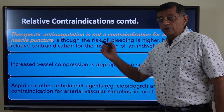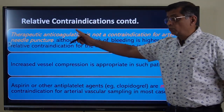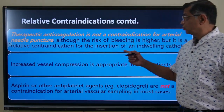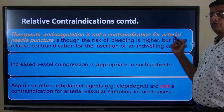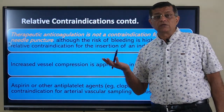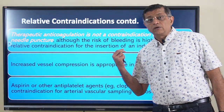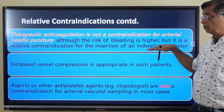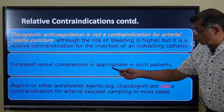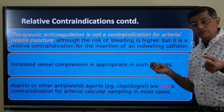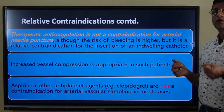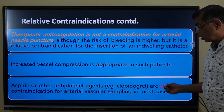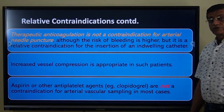Therapeutic anticoagulation is different from thrombolysis. Therapeutic anticoagulation is not a contraindication for arterial puncture, although bleeding risk is higher; it is a relative contraindication for insertion of an indwelling catheter. For example, a patient on enoxaparin 60 mg BD can still have an arterial sample taken, but arterial line insertion should be avoided. Increase compression time beyond the normal five minutes in such patients. Aspirin and antiplatelet agents like clopidogrel are not a contraindication for arterial sampling.